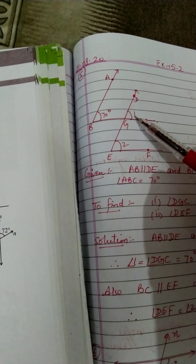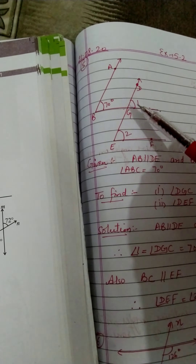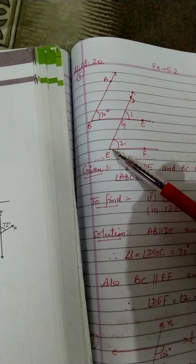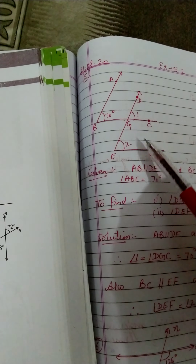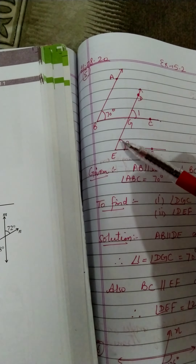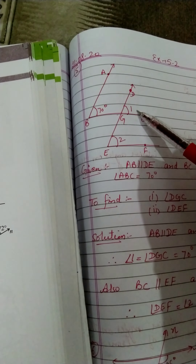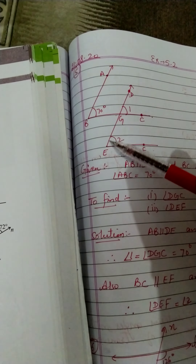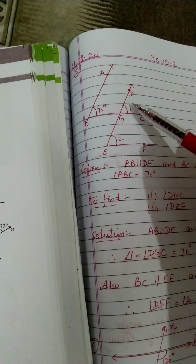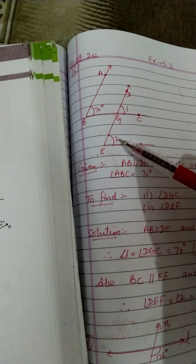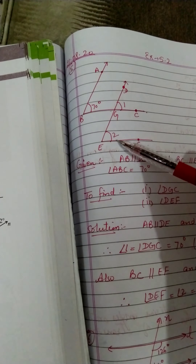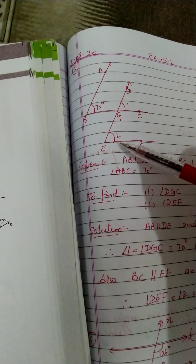इसी तरीके से, BC parallel to EF है, तो DE transversal line है जो इन्हें G और E points पर cut कर रही है। हम angle one 70 degree find out कर चुके हैं। DE transversal है, तो angle one और angle two corresponding angles हैं। Therefore, angle one 70 degree है तो angle two भी 70 degree होगा — यानि angle DEF is 70 degrees।